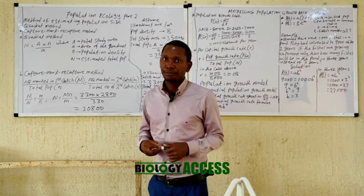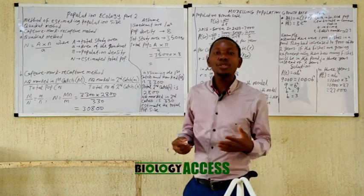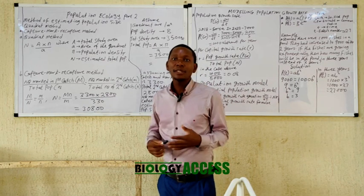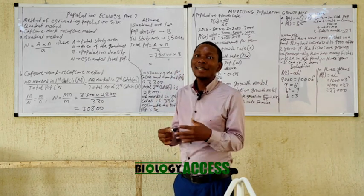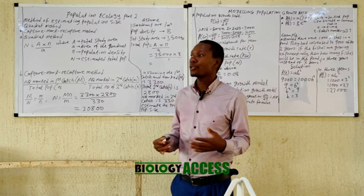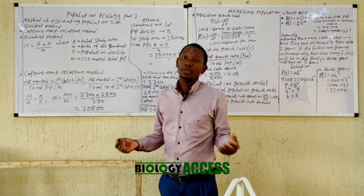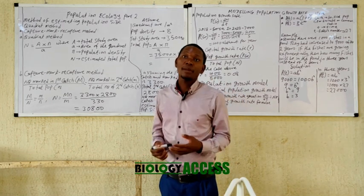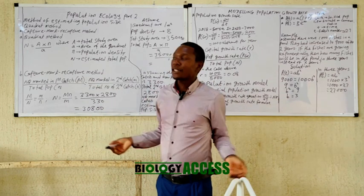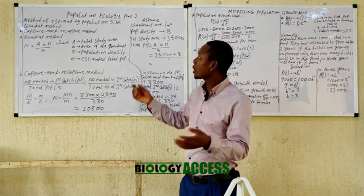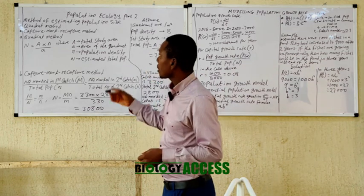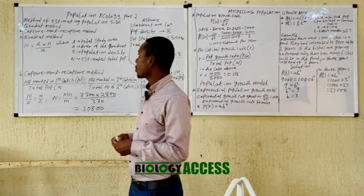The quadrat method is basically used to estimate organisms that are either stationary or very slow moving. In some cases it is used to estimate the population size of plants in certain areas. Let's take a look at the formula for estimation using the quadrat method.